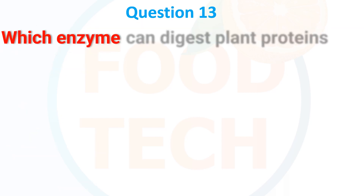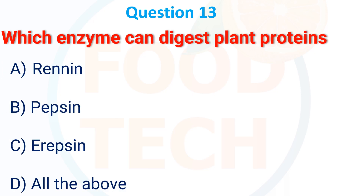Which enzyme can digest plant protein? A. renin, B. pepsin, C. eradicin, D. all of the above. The answer is B, pepsin.